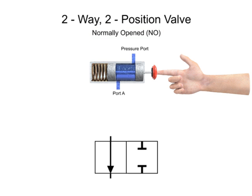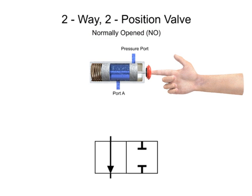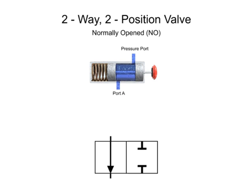Additionally, this valve is a spring return valve, meaning that after it is actuated, a spring returns the spool to the normal position. A spring symbol is placed next to the block representing the normal position.